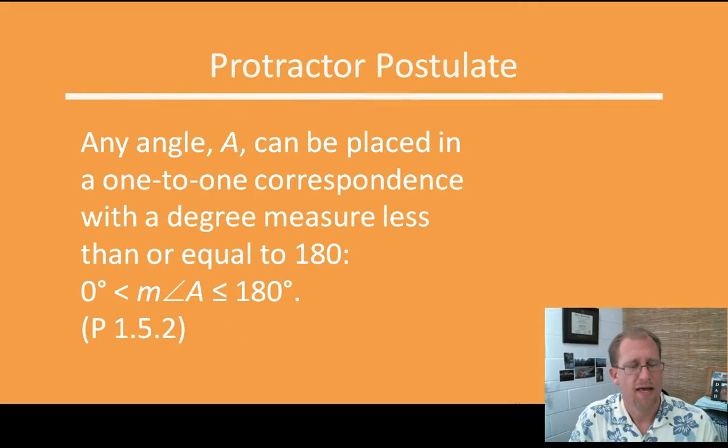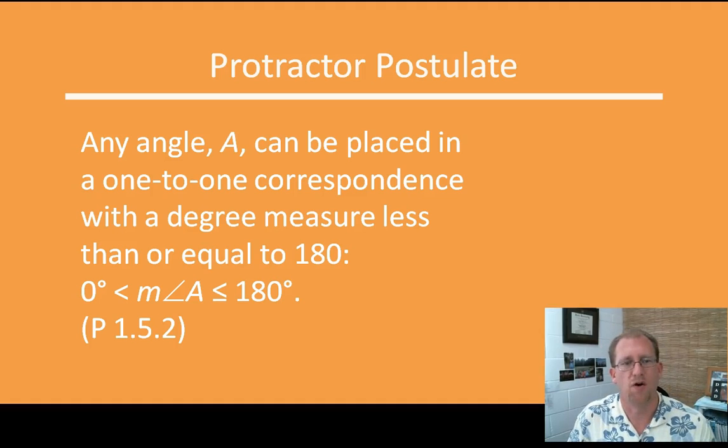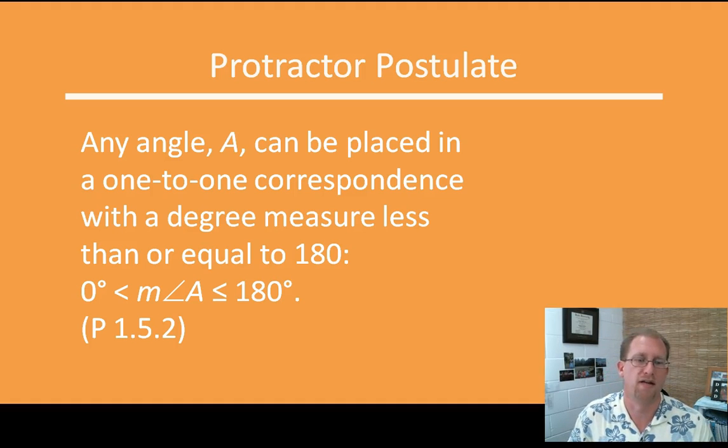Protractor postulate. Any angle can be placed in a one-to-one correspondence with a degree measure less than or equal to 180 degrees. A protractor is a half circle and we use it to measure degrees. Every angle you measure is less than 180 degrees because you're measuring the interior of the angle. If you've got something bigger than 180, you're measuring the exterior — just turn your protractor over.